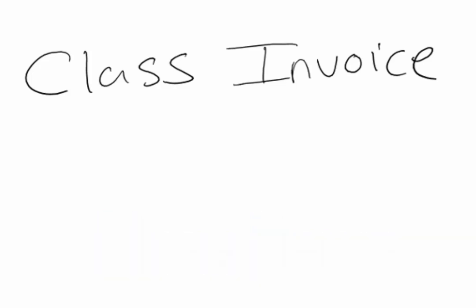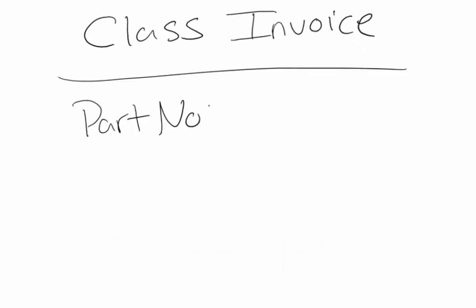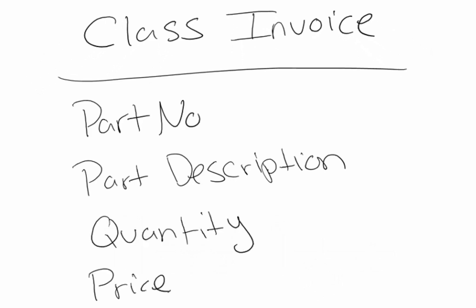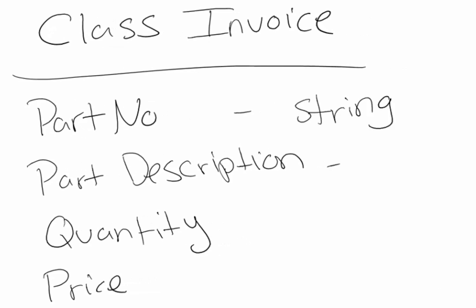Our invoice is going to include four pieces of information: a part number, a part description, a quantity, and the price of the item. Once you have lined out the properties or the items that need to be held in your class, you'll need to define which data types are going to best fit. A part number could be a string, a part description could also be a string, the quantity could be an integer, and the price will be a decimal.